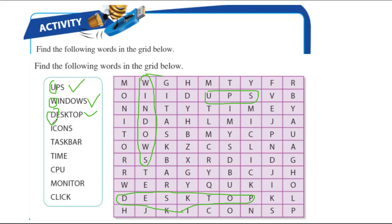'Icons' — the first letter is I. Where is the I? Here is an I but it doesn't have C around it. Here I found I but there is C but not O. Here I found I, C, O, N — icons done!